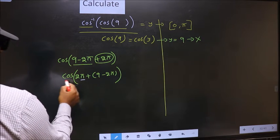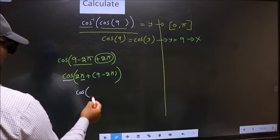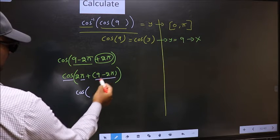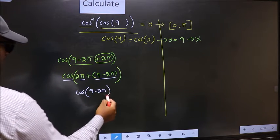Here we have pi, so cos is not going to change. It will remain cos. And inside, we get this angle.